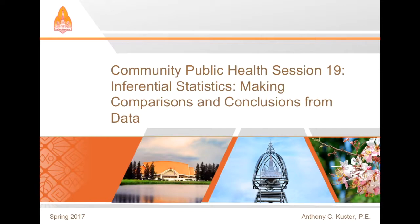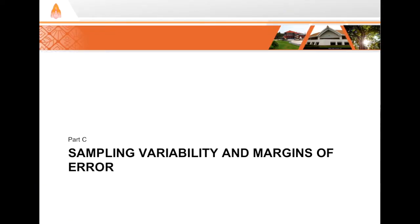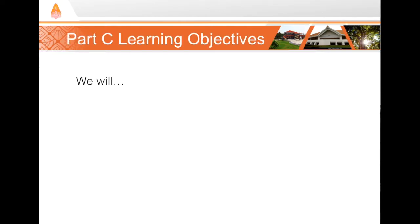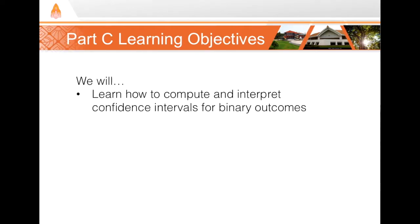Hello and welcome to CPH session 19, inferential statistics: making comparisons and conclusions from data. This is part C: sampling variability and margins of error. In this section we'll talk about how to compute and interpret confidence intervals for binary outcomes.